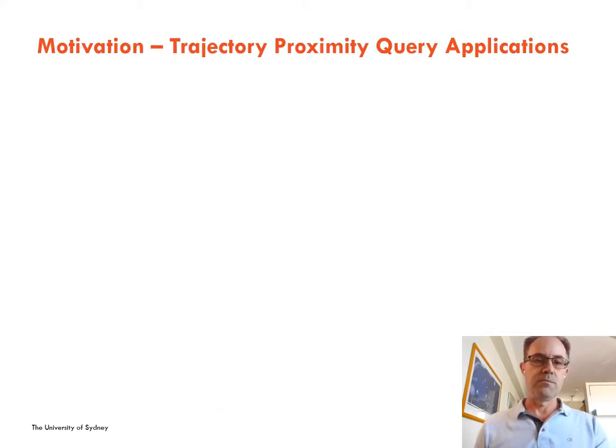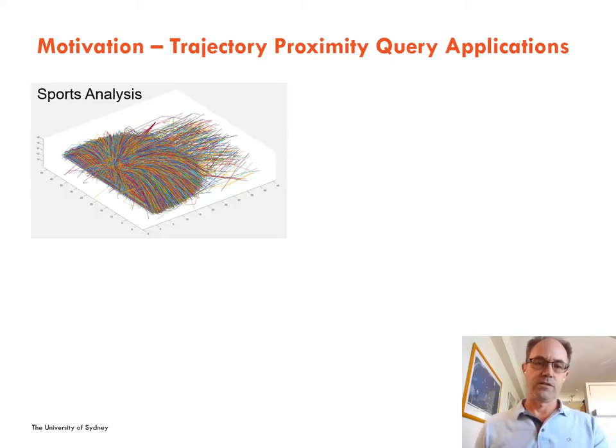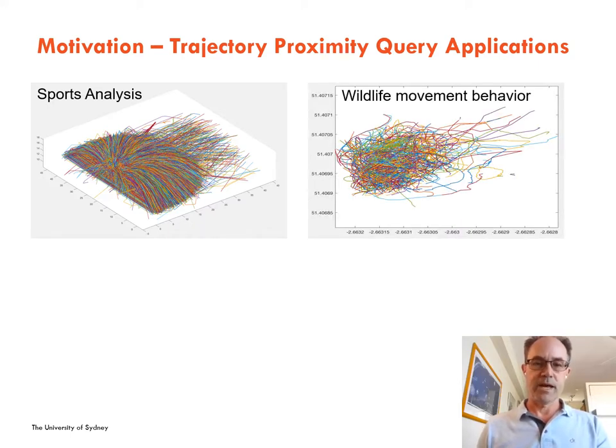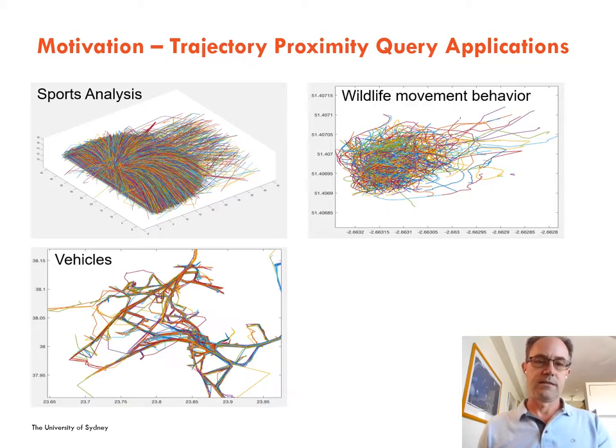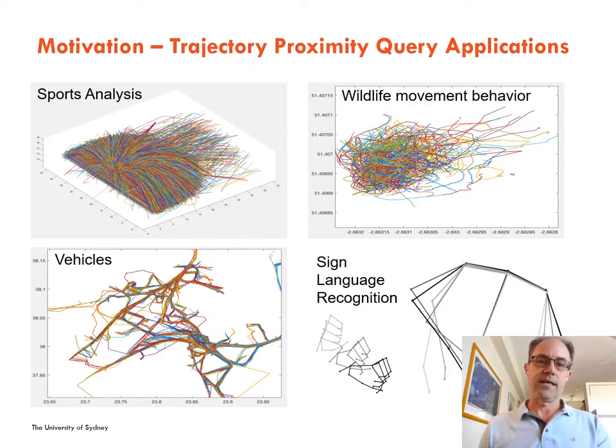To motivate this problem, one can think about various real-world applications that capture trajectory data. For example, three-point basketball shots on net, the flight path of bats, cement truck movement on a road network, and sign language classification using human body joint movement.